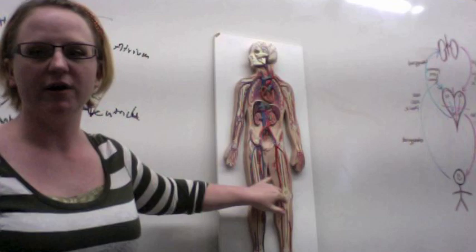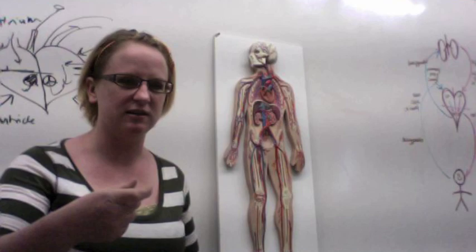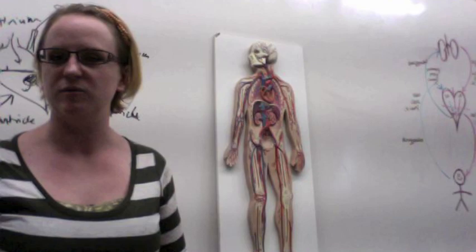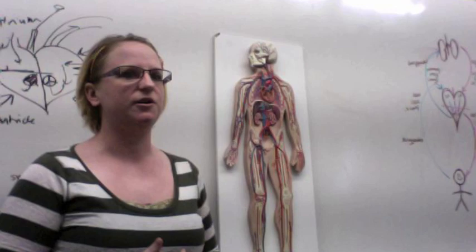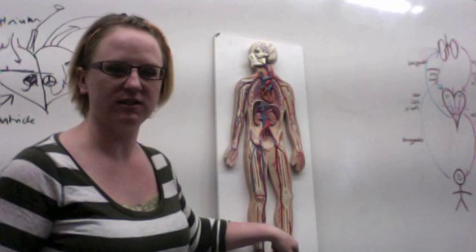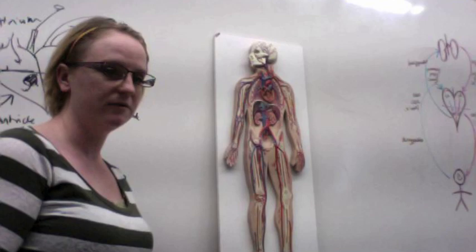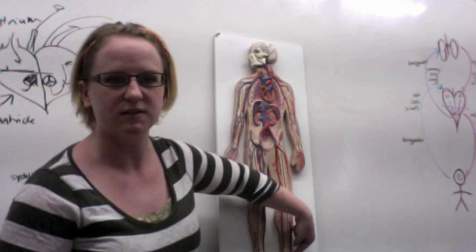Next is the posterior tibial pulse. As you could imagine, it's on the posterior side of the tibia, and you feel for it just anterior to that big tendon in the back of your ankle. If you pinch there, you'll feel your pulse. Last for your pulse points is the dorsalis pedis. 'Pedis' means foot, and 'dorsalis' refers to the dorsal side — the top of the foot, as opposed to the plantar side, which is the bottom. So the dorsalis pedis pulse is on the top of your foot, kind of where the top of your ankle is.